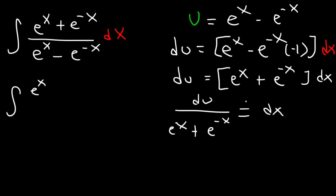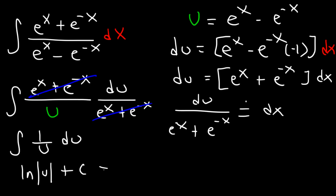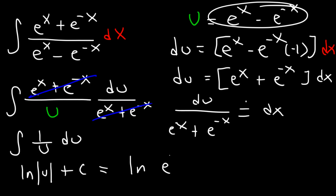Replace the denominator with u, and dx with du over (e to the x plus e to the negative x). These cancel, leaving the antiderivative of 1 over u du, which equals ln|u| plus c. Replacing u gives the final answer: the natural log of the absolute value of (e to the x minus e to the negative x) plus c.